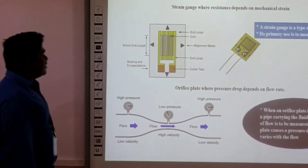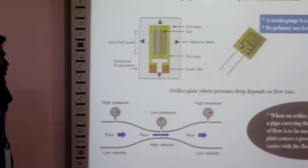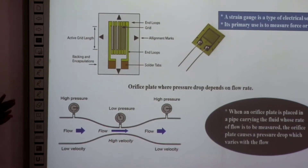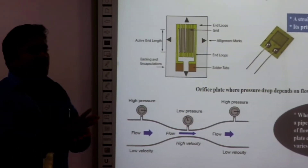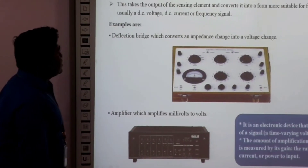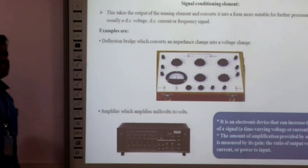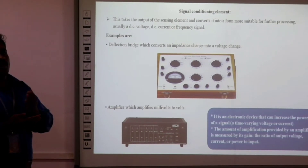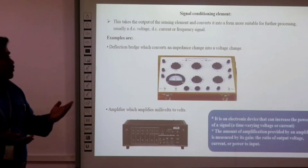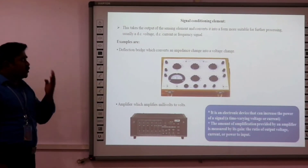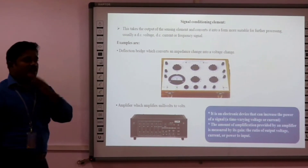An example of a measurement system is the strain gauge, used to calculate pressure — what kind of pressure you apply to the particular equipment. The sensing element used is the strain gauge. Next, the signal conditioning element: the output of the sensing element converts the input form to something more suitable for processing, whatever is required for the process or signal.